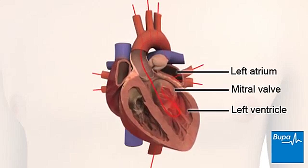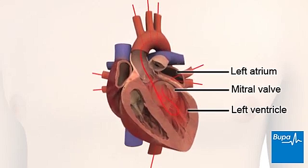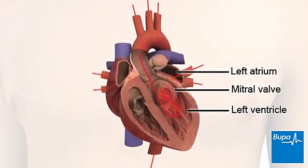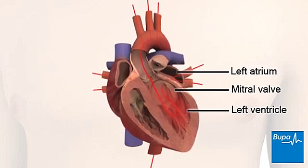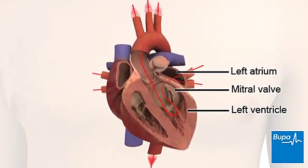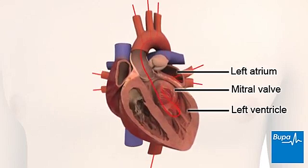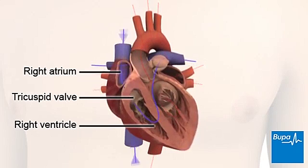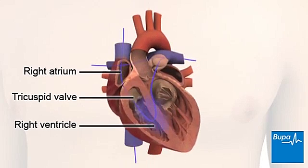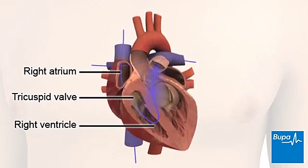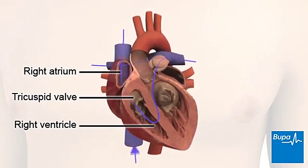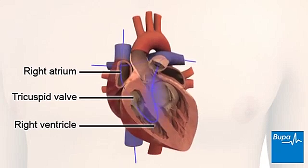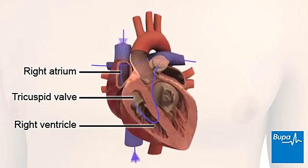The left atrium lies above the left ventricle. The two are separated by a valve called the mitral valve. The right atrium is above the right ventricle, and these two chambers are separated by the tricuspid valve.